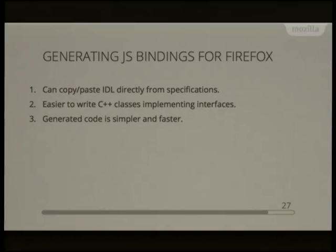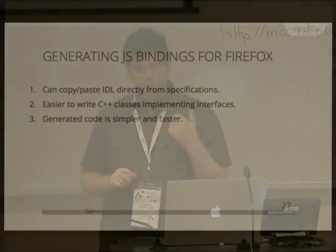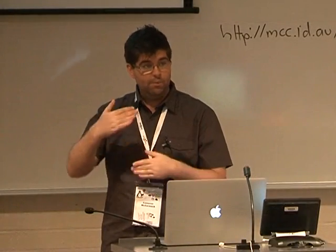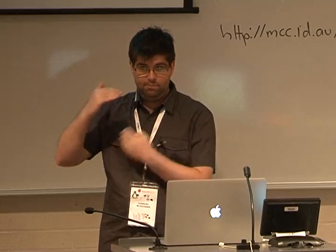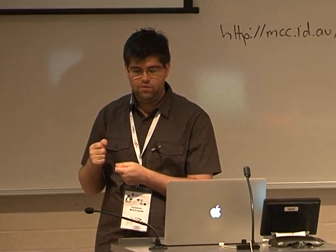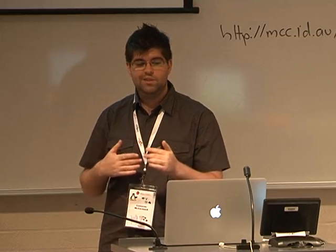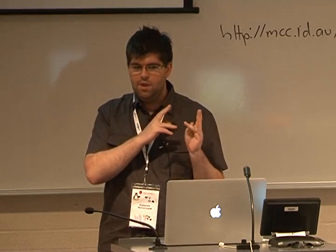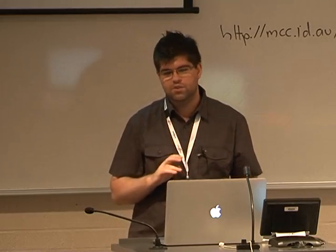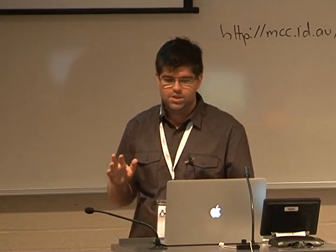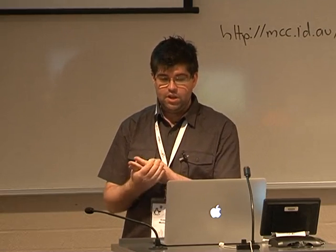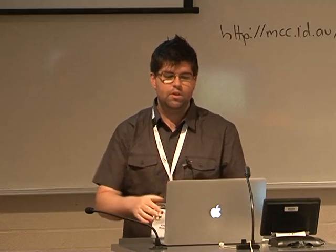In terms of implementation, in Firefox we have been recently converting our underlying bindings from JavaScript to C++ to use Web IDL directly, replacing a previous IDL variant language. This makes it easier for developers, who can copy and paste IDL fragments from specifications directly into a file and get the right bindings generated. It's also easier to write the C++ classes that implement the interfaces, since the old IDL mechanism had issues like supporting multiple inheritance requiring many casts. And the generated code is actually much simpler and faster.